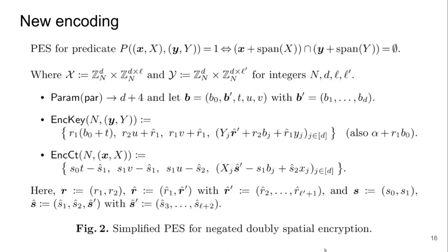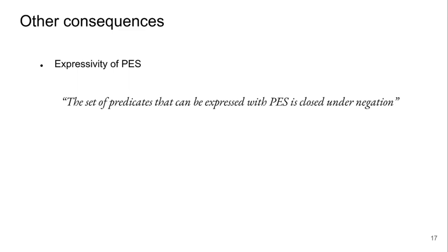This negated pair coding encodes the predicate where the two spaces do not intersect. Our results also tell us new information about the expressivity of pair codings: the set of predicates expressible with pair codings is closed under negation — we didn't know this before. This suggests that building pair codings for context-free languages may be harder than we think, or perhaps impossible, since context-free languages are not closed under complementation. If we could build pair codings for context-free languages, we could also build them for a predicate class strictly more powerful than context-free languages.